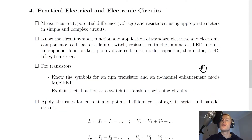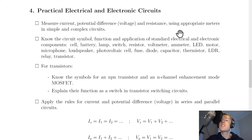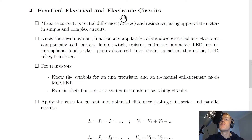Moving on to section four, practical electrical and electronic circuits. You need to be able to measure current, potential difference, and resistance using appropriate meters in simple and complex circuits. So you need to use ammeters for current, voltmeters for voltage, and ohmmeters for resistance.